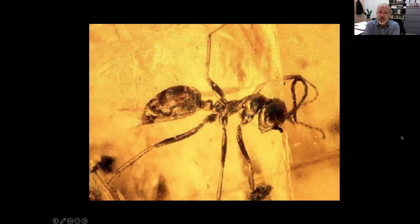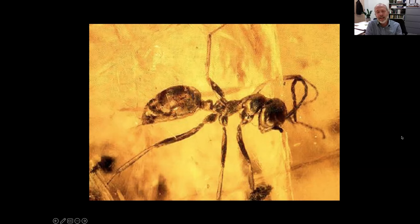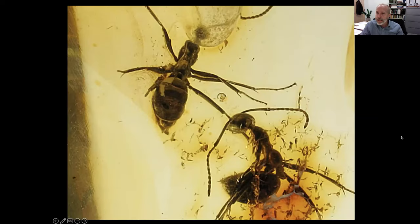This is actually the first Cretaceous-aged ant that was discovered, found back in 1967. This is Sphecomyrma freyi, from the amber deposits near Sayreville, New Jersey. This species would have existed somewhere between 90 and 95 million years ago. For a long time, it was known from one single worker specimen. I'm happy to say that since then, quite a few more Cretaceous amber fossils have been discovered. Cretaceous ants actually turned out to be quite ecologically diverse, and we're learning a lot more about that period of ant evolution.